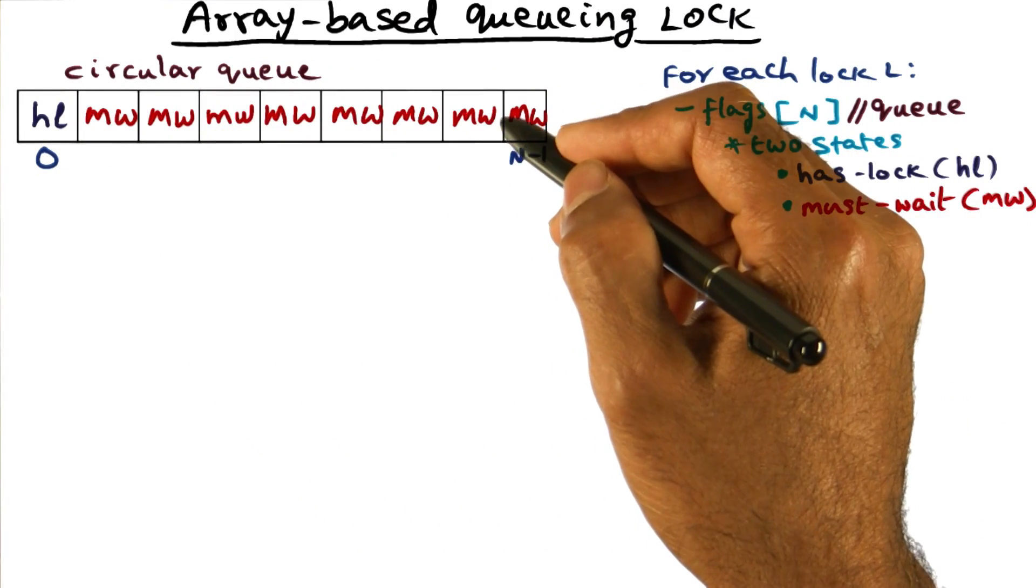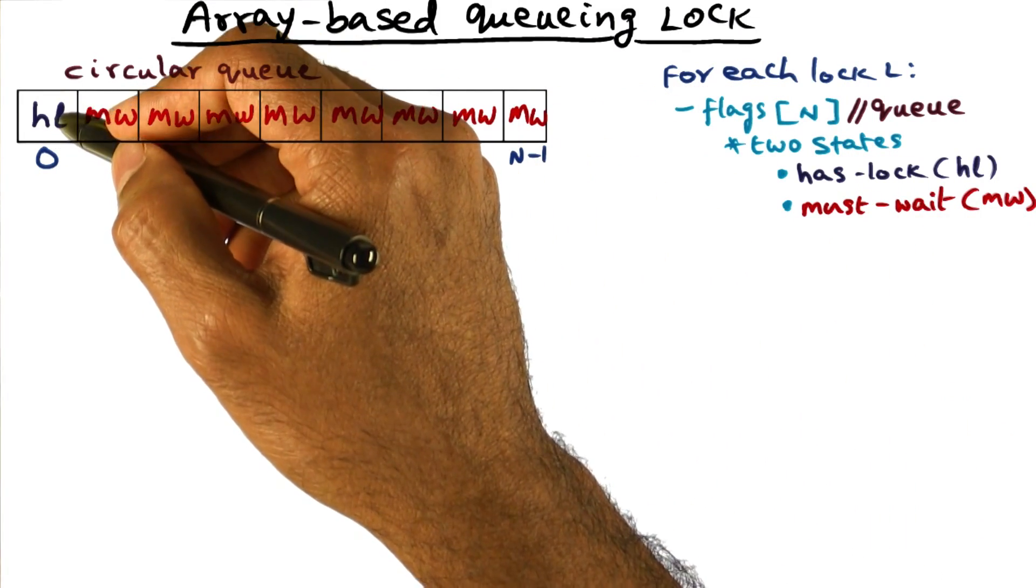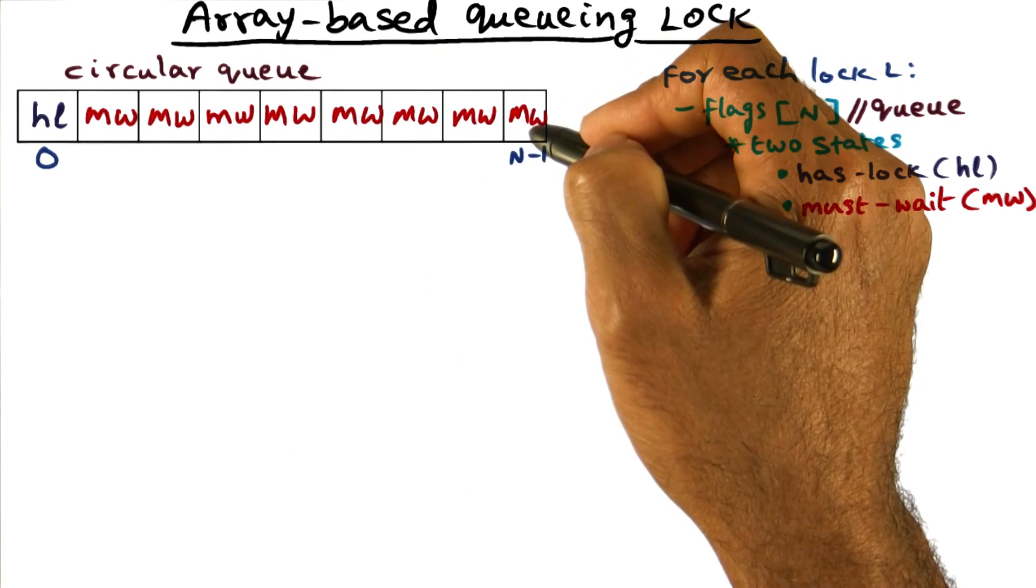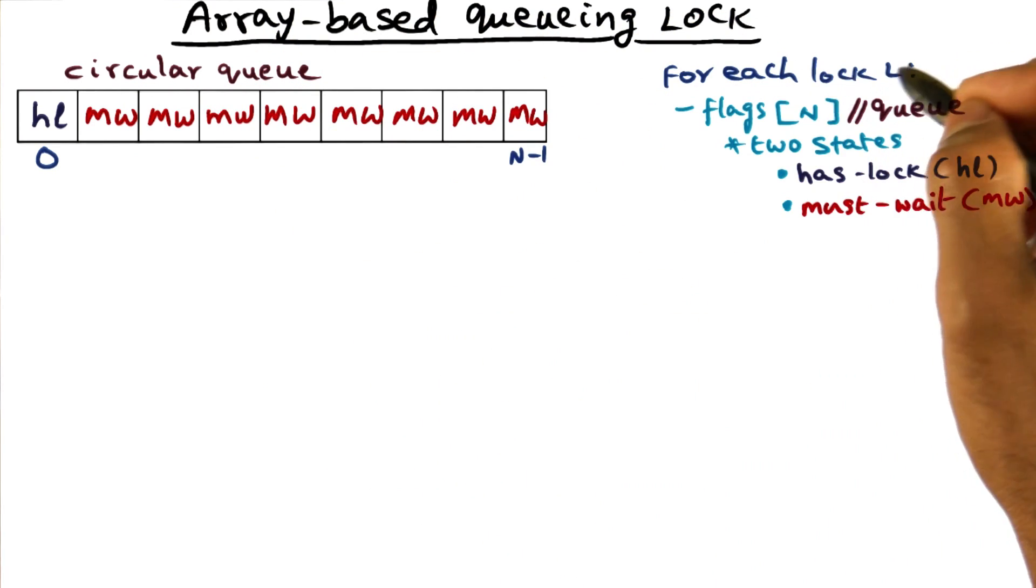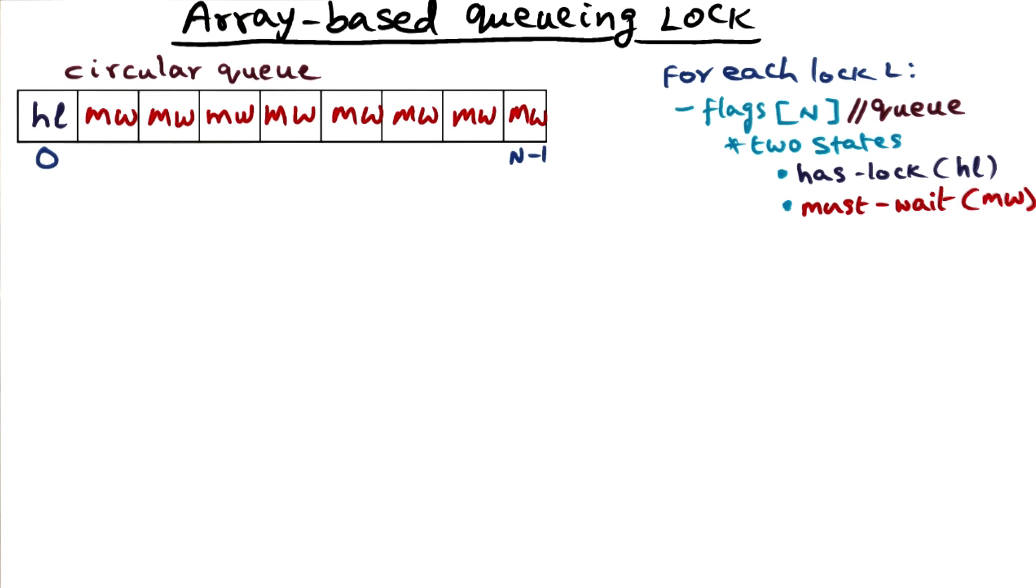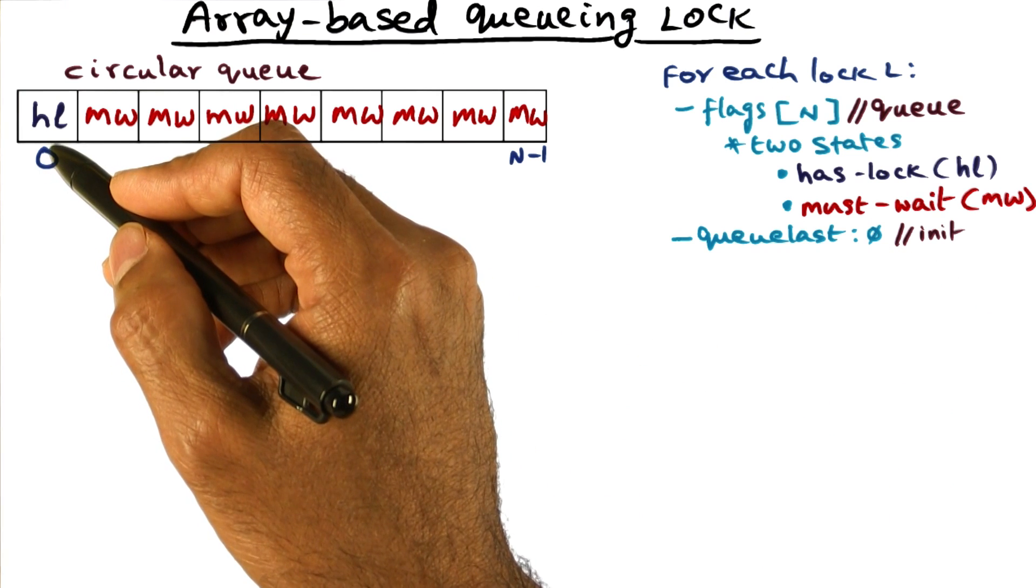Since we have initialized this array with HL in the first part and MW in all the other parts of this array, to enable the queuing, what we're going to do is associate with each lock another variable, which is called a queue last variable. And this queue last variable is initialized to zero.